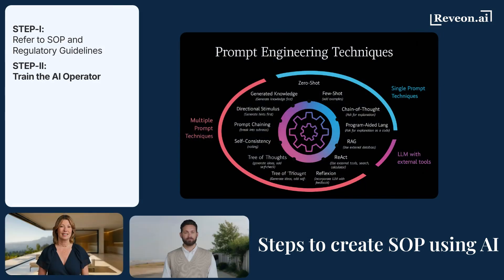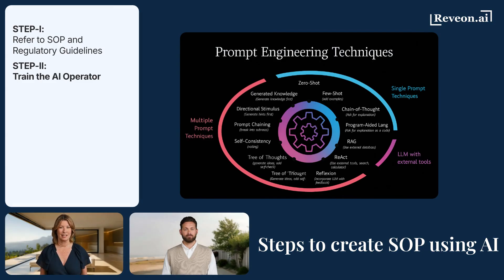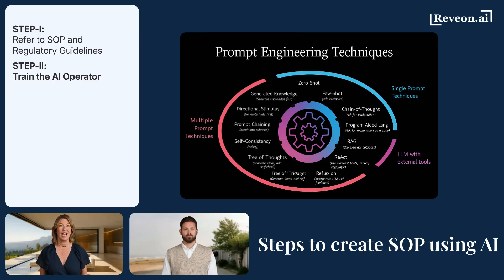The next step is to ensure the person using the AI is trained. Prompting isn't guesswork — it's a skill. The better your operator understands how to frame instructions, the better the AI will perform. Think of it like briefing a junior writer — context is everything.